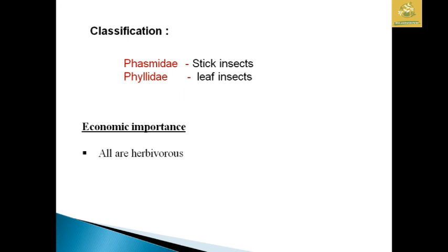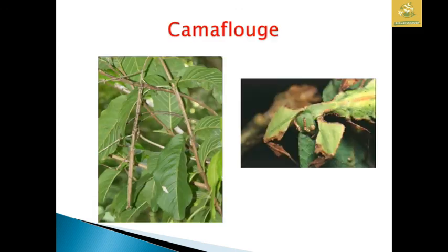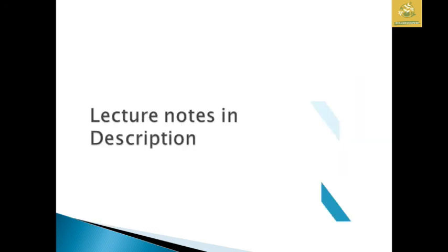The classification: Phasmatidae which are stick insects and Phylliidae which are leaf insects. Their economic importance is that all are herbivores in nature. I have given the camouflage images where you can see pictures of stick insect and leaf insects. Lecture notes are provided in the description.